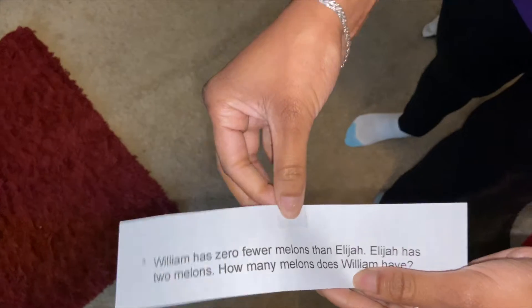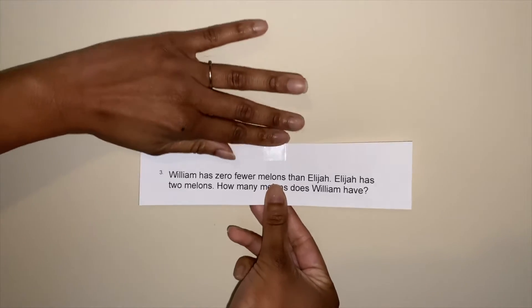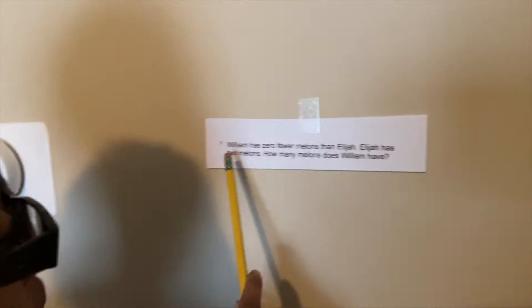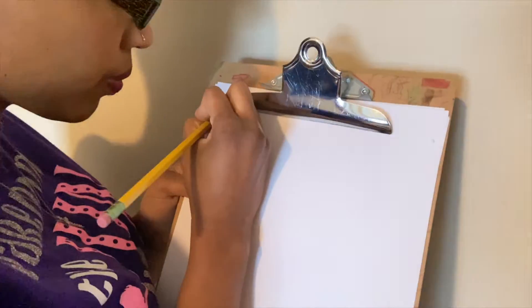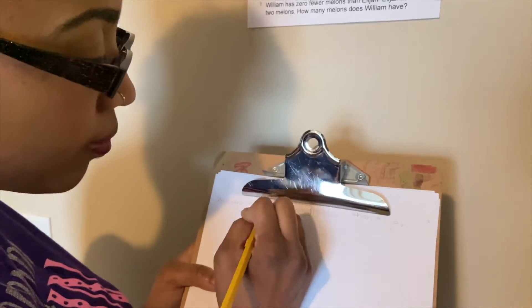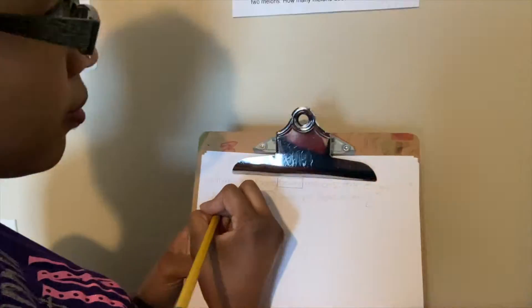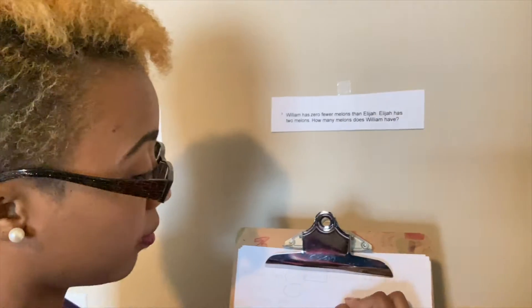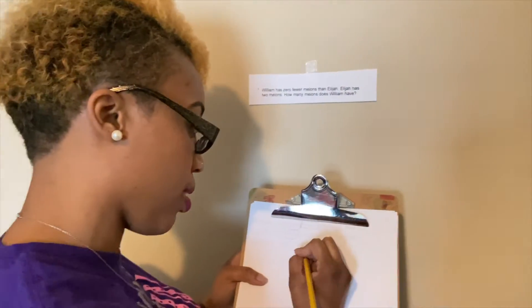Our next game is called Around the World. With this game, you'll cut out all the problems from the worksheet and place them all around your room. Then, in a circular motion, children must walk around the room, find the problems, and solve them. Once they've solved all the problems, they must show you their sheet of paper. You'll look over the work and see if they got all the answers correct. If they didn't get an answer correct, you'll tell them how many answers they must go back and fix — without giving them the actual number they got wrong — so they have to find their error and correct it. If playing with multiple children, the first person to get all the correct answers wins.